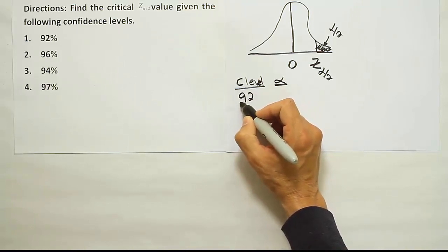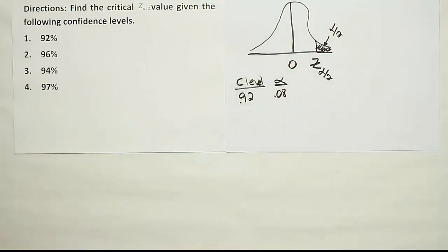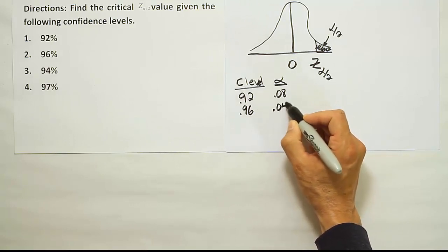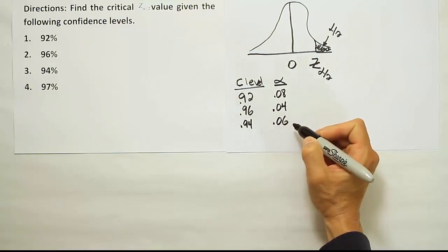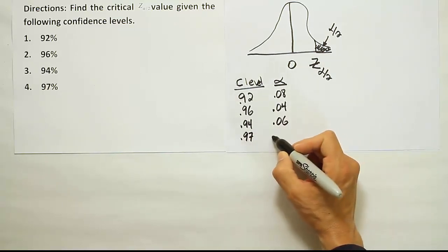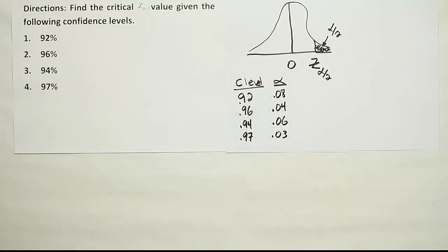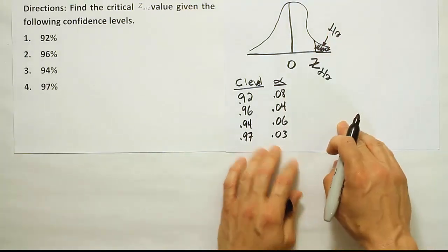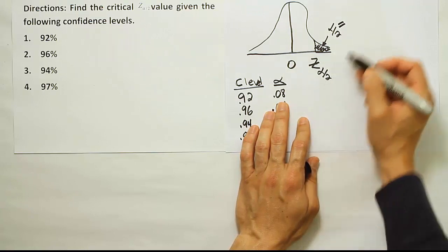Remember that confidence level and alpha have a special relationship. They have to add up to 100%, so we have 92% confidence level. Our alpha has to be the leftover 8%, or 0.08, to add up to 1 or 100%. And if you have 96%, then this must be 0.04. And if it's 94%, then this must be 6%, or 0.06. And if we're dealing with 97%, then this must be 0.03 or 3%. So that is the pattern, the relationship. And if that's the case, we can certainly figure out what alpha divided by 2 is. Let's start with this very first example. If alpha is 8%, what's alpha divided by 2? It would have to be 4%.